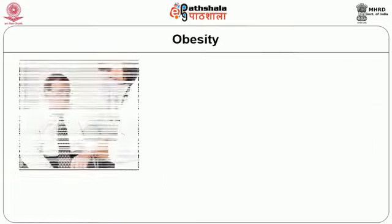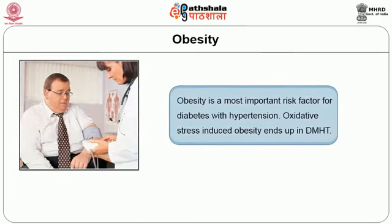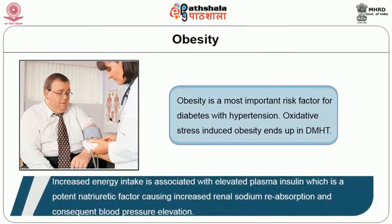The next risk factor is obesity. Obesity is the most important risk factor for diabetes with hypertension. Oxidative stress-induced obesity ends up in diabetes mellitus and hypertension. Increased energy intake is associated with elevated plasma insulin, which is a potent natriuretic factor causing increased renal sodium reabsorption and consequent blood pressure elevation.